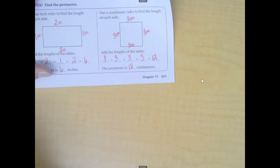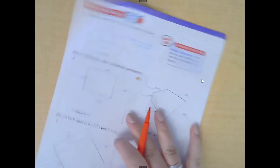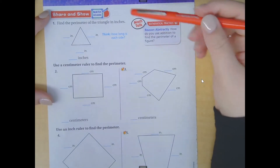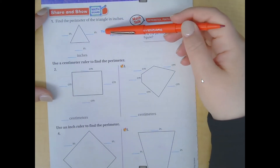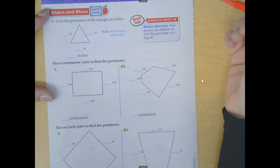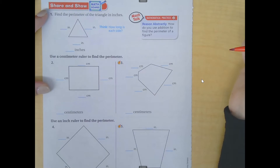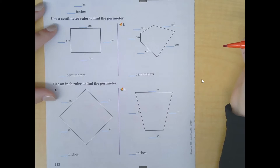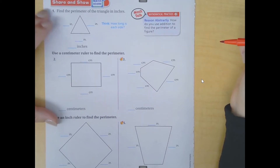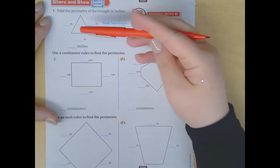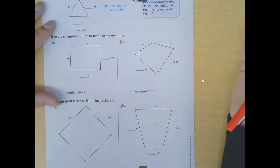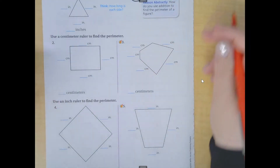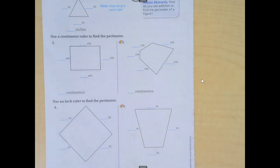Flip your page over. Find the perimeter of the triangle in inches. You're going to have to pay attention to the label so you know whether it's inches or centimeters, and you're going to have to carefully measure with your ruler. I want you to pause the video and try to measure all these sides, get them labeled, before you press play again. Remember, pay attention to whether it's inches or centimeters.